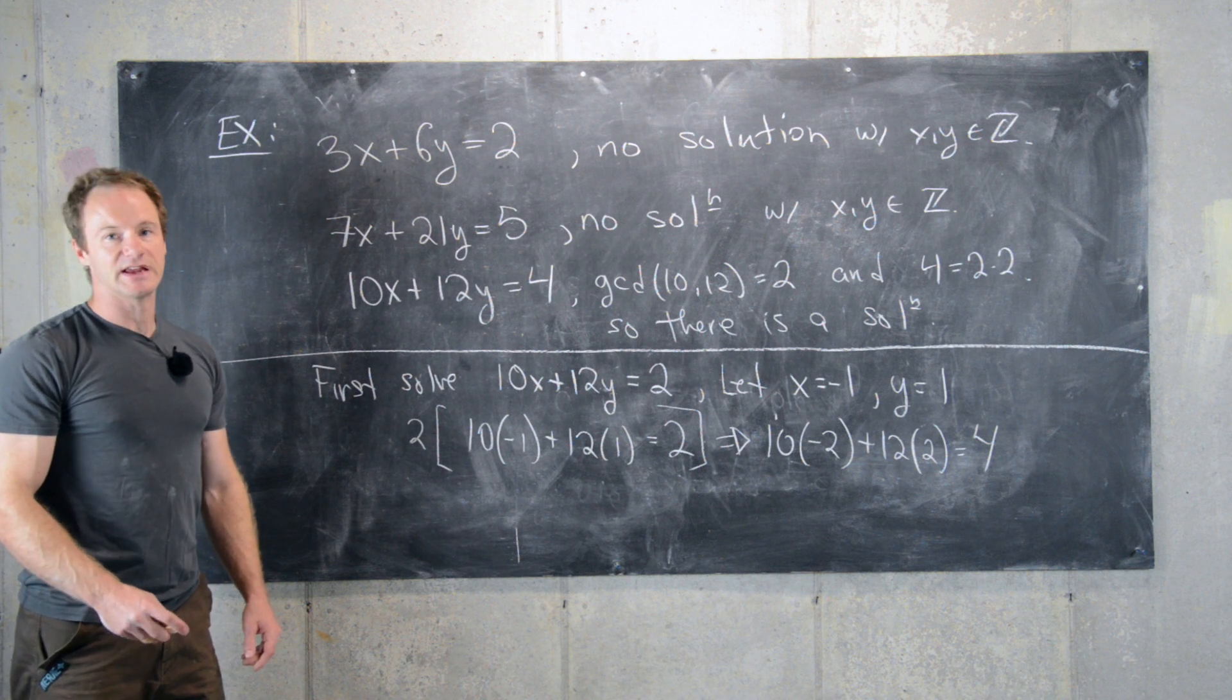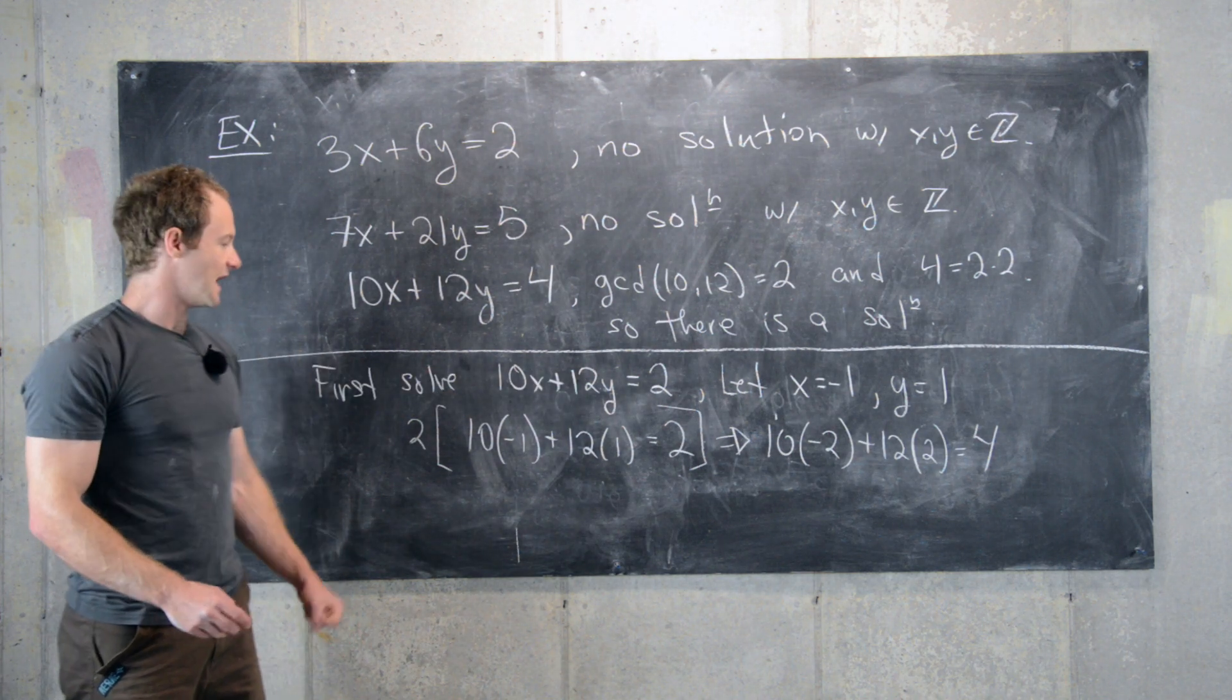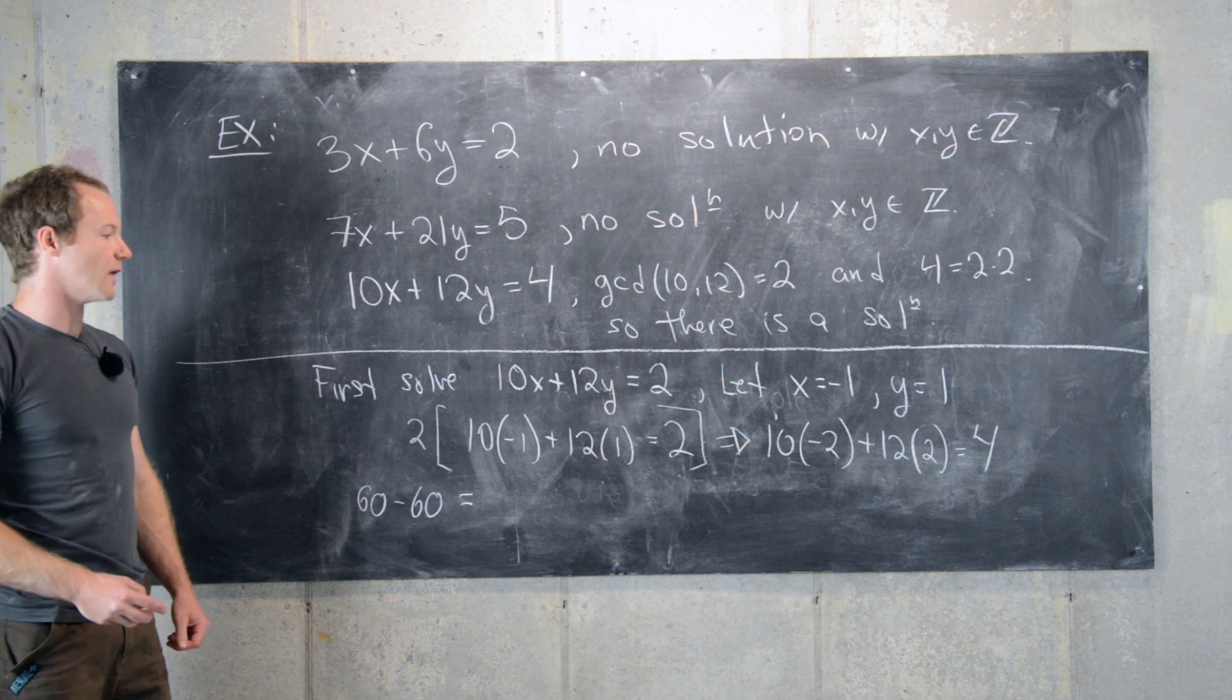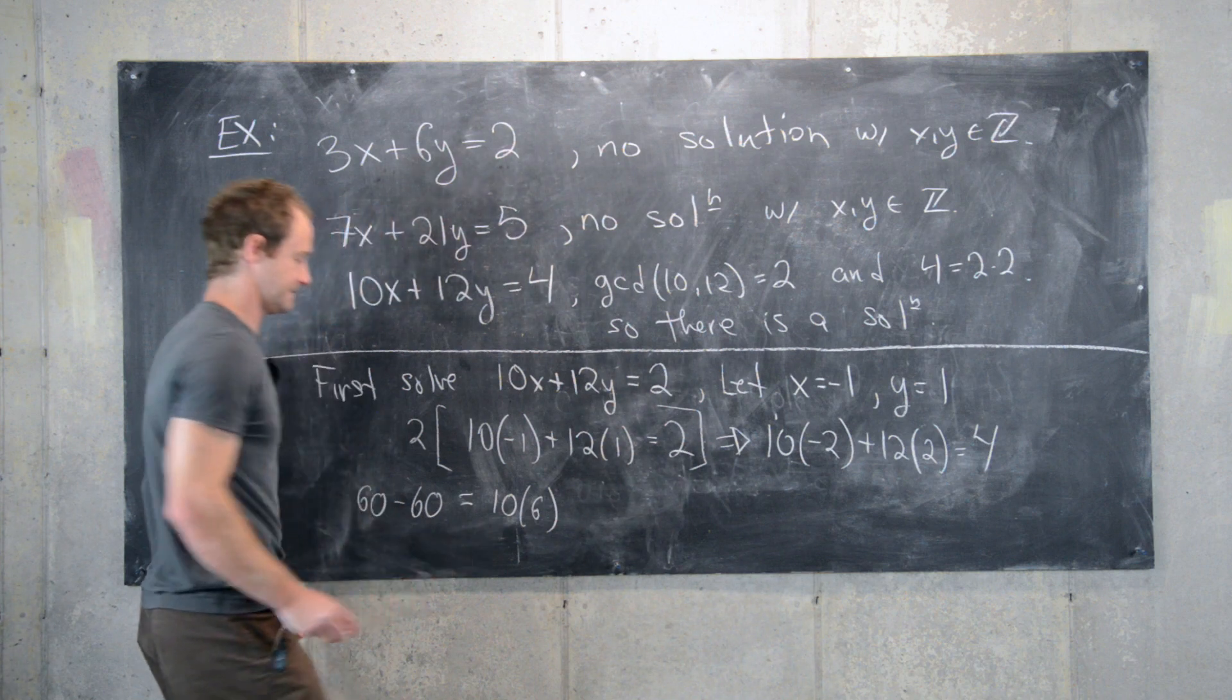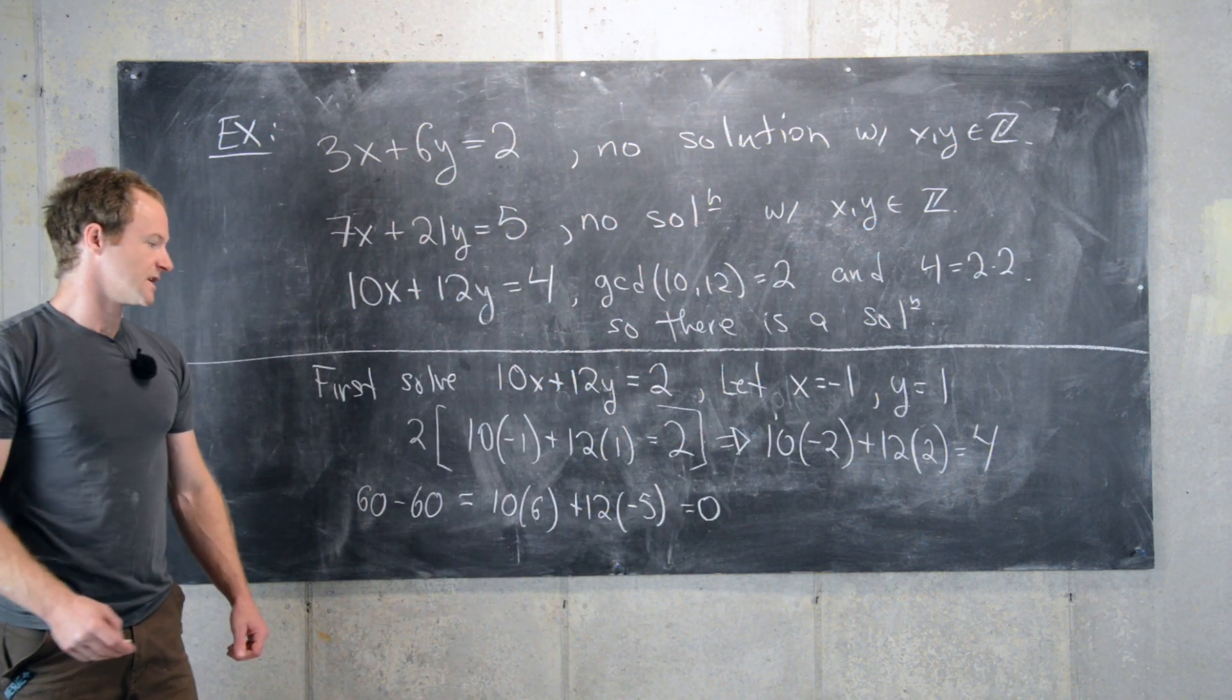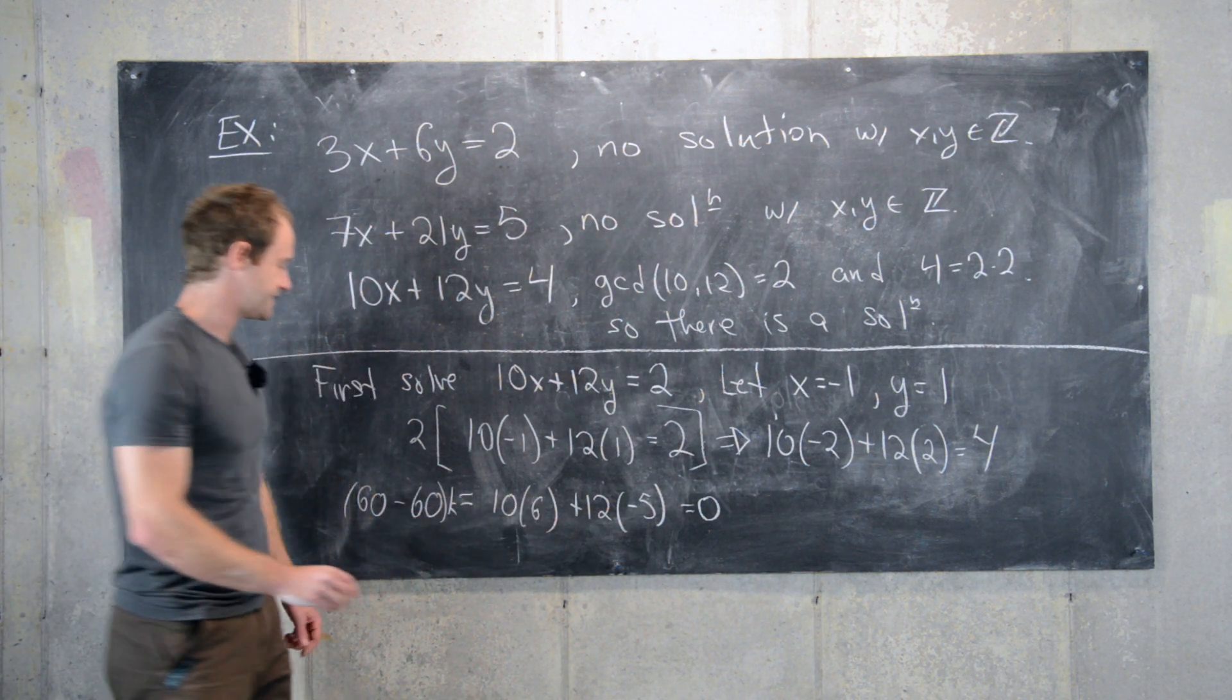Now let's see how we can get infinitely many solutions. We'll notice that 10 and 12 have a least common multiple of 60. We'll write 60 minus 60 equals 0. And then we'll factor 60 two ways. Let's factor 60 as 10 times 6 plus 12 times negative 5 equals 0.